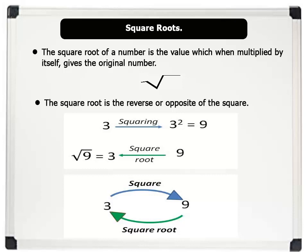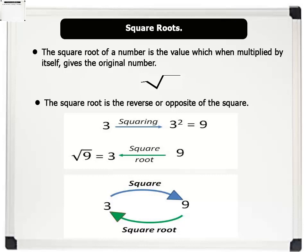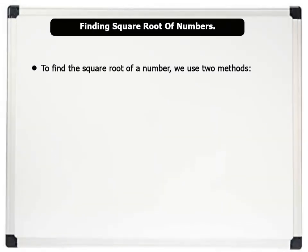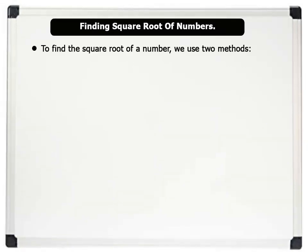Let us solve some problems. Now, to find the square root of a number, we can use two methods. 1. The prime factor method. 2. The division method. Let us solve some problems.